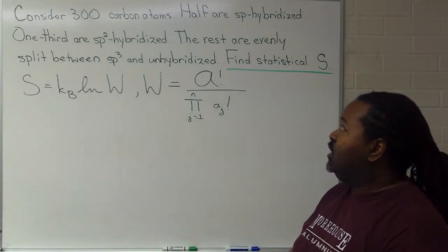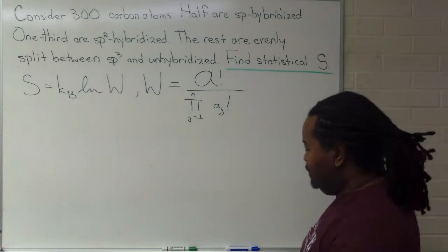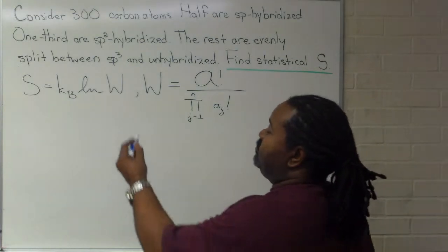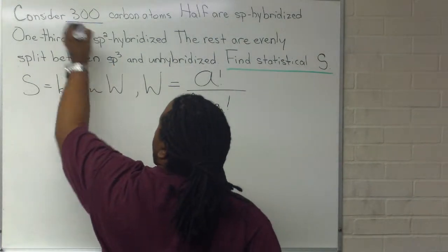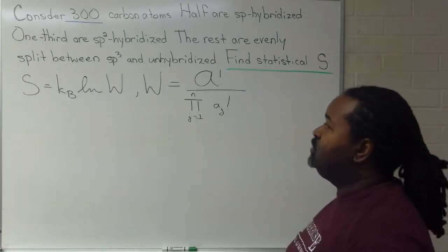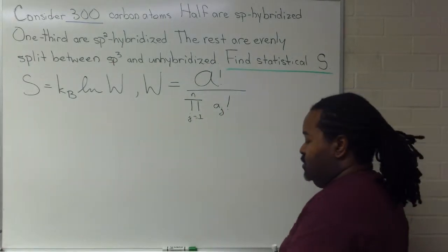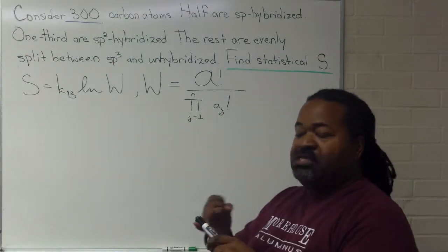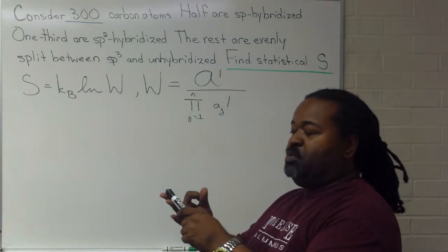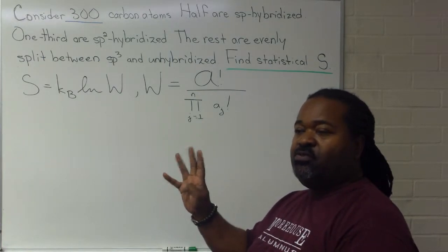In this case, the number of particles is already given to us. We have 300 carbon atoms, so we have something for script A. Now, the number of states: we have SP, SP-2, SP-3, and unhybridized for four states.